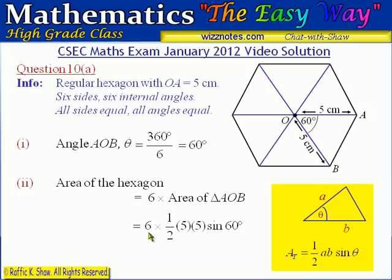So the area of the hexagon is 6 multiplied by the area of triangle AOB, which is one half times 5 times 5 times the sine of 60 degrees. When we do that calculation the result is approximately 65 centimeters squared. The question asked us to calculate to the nearest whole number, so the area of the hexagon is 65 centimeters squared. That's the answer for part A of question 10.